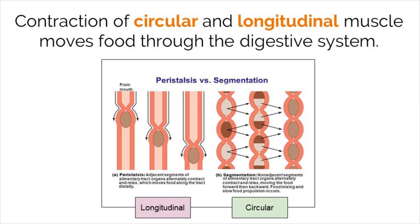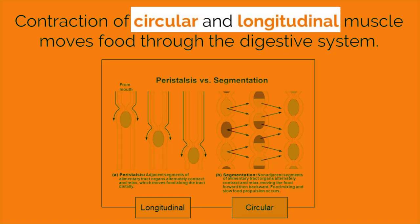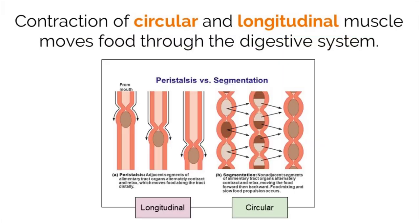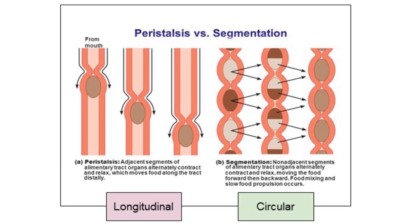Now let's discuss how food actually moves. Gravity alone won't move food down our complex digestive system, so we have two different types of muscle in place to make sure that food only moves in one direction. The first type of movement is called peristalsis, which is done by longitudinal muscle. This muscle moves in a wave-like motion that pushes food down the digestive system.